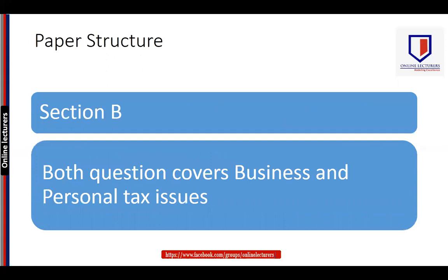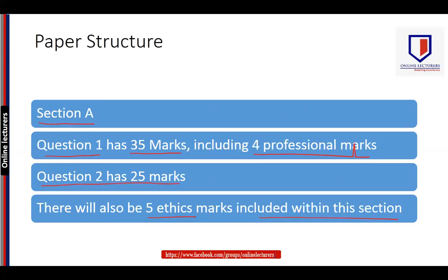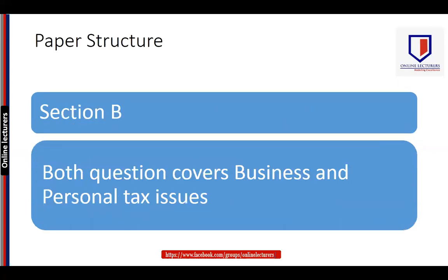As far as Section B is concerned, it covers two questions, and those two questions cover 40 marks. The section deals with some business issues — incorporated businesses and other related issues — and some personal tax issues related to an individual.